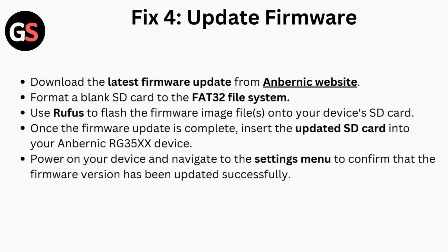Fix 4 is to update the firmware. Download the latest firmware update from the Anbernic website. Format a blank SD card to the FAT32 file system. Use a flashing tool to flash the firmware image files onto your device SD card. Once the firmware update is complete, insert the updated SD card into your Anbernic RG35X device. Power on your device and navigate to the settings menu to confirm that the firmware version has been updated successfully.